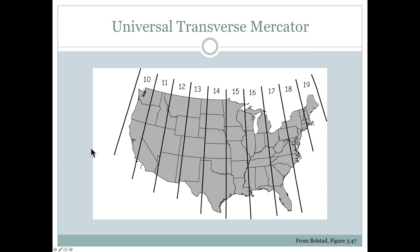If we look at where these various UTM zones are throughout the United States, Oregon is contained in UTM zones 10 and 11, and by the time we get over to the east coast we're in UTM zone 19.